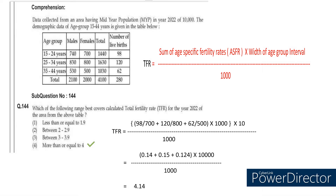Now coming to the next question, they are asking us to calculate the TFR. If you can calculate ASFR, the TFR formula becomes: sum of age-specific fertility rates multiplied by width of age group interval, divided by 1000. For age group 15 to 24: 98 divided by 700. For 25 to 34: 120 divided by 800. For 35 to 44: 62 divided by 500 females. We multiply each by 1000 as the ASFR multiplier, then multiply by the width of age group interval, which is 10, and divide by 1000. If you solve it, you will get around 4.14.